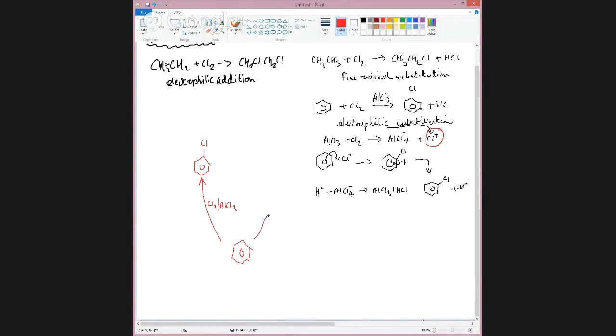If you want to brominate a benzene ring, you would normally use not aluminium chloride as a catalyst, but iron-3-bromide. But essentially the same thing is happening. And you get bromobenzene. And that's another reaction.